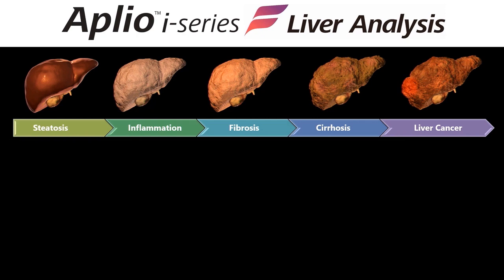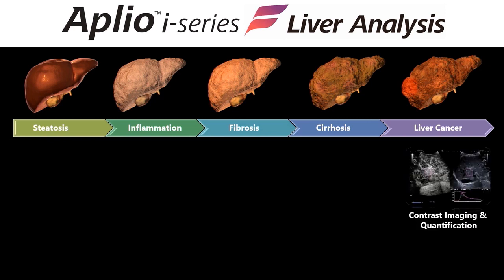When you look at the progression of NAFLD, the earliest stages start with fatty infiltration or simple steatosis, which often goes undetected. Some patients are at risk for inflammation and fibrosis, leading to a more advanced stage called non-alcoholic steatohepatitis, or NASH, which can involve liver cirrhosis and perhaps liver cancer. Ultrasound has a number of quantitative tools to help in the diagnosis. For patients at risk of liver cancer, contrast-enhanced ultrasound can be useful for characterization of liver lesions, both in adult and pediatric patients. With the Aplio i-Series, we also offer robust quantification software to quantify the time intensity curve from micro-bubble contrast agent accumulation within focal liver lesions.